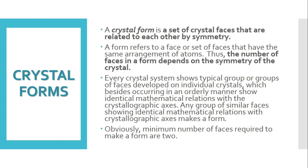For example, one face may be parallel to your vertical axis, or one face may be cutting your horizontal axis. This type of mathematical relationship exists between these groups of faces and the crystallographic axes. Together they make your crystal form. A crystal form is a set of crystal faces that are related to each other by symmetry.